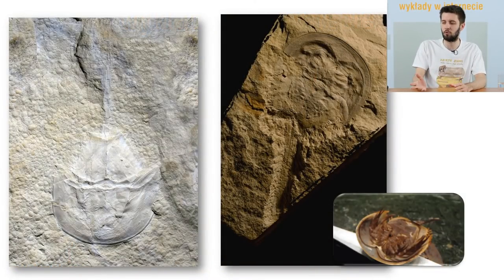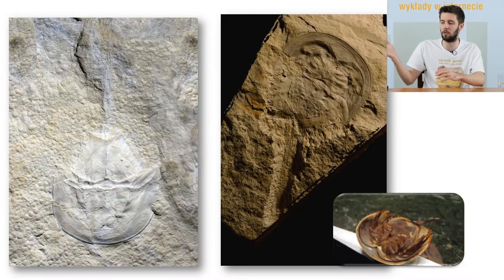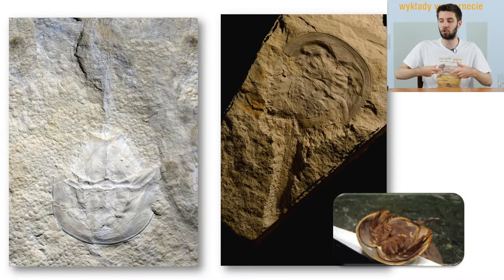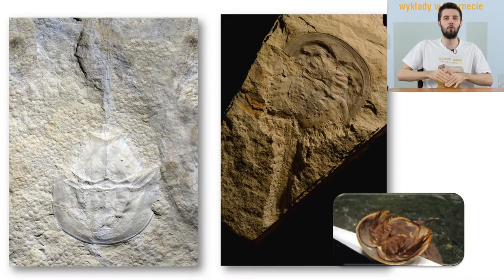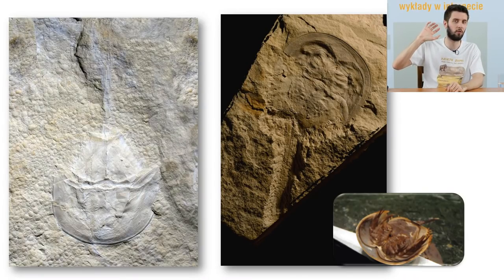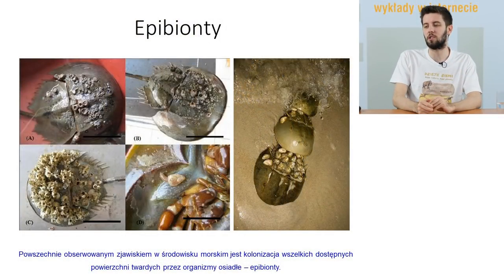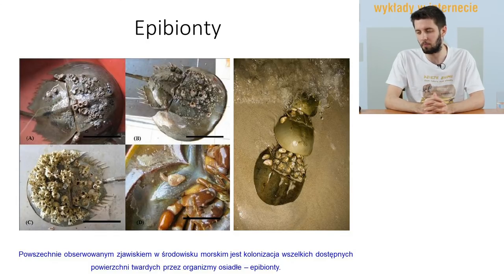Jeszcze pooglądajmy te jurajskie skrzypłocze - niekiedy mamy kompletne okazy z Owadowa z prosomą, opistosomą i telsonem. Czasami zdarzają się okazy zachowane od spodu - od strony brzusznej - gdzie widać odnóża i nawet miejsca, gdzie były skrzela, bo skrzypłocze pod tarczą głowową mają odnóża, a niżej mają skrzela falujące. Skrzypłocze współczesne są często pokryte epibiontami - to ogólna nazwa dla różnych zwierząt morskich, które cementują się do twardego podłoża, aby filtrować substancje odżywcze z toni wodnej.